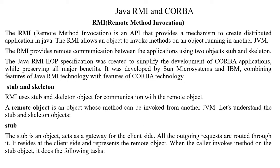So what is RMI? RMI is an API that provides a mechanism to create distributed applications in Java. Java Remote Method Invocation is an API that allows invoking a method that exists in another address space — which can be locally or on a server machine.